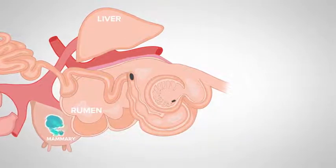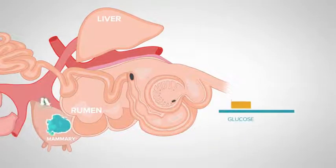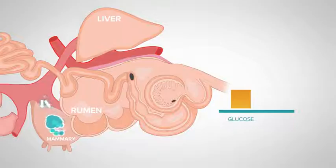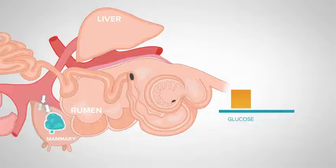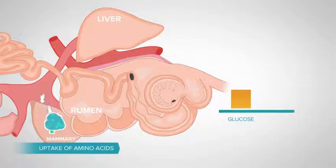What we also see is that if we increase the amount of glucose produced, we see increased insulin, and among its other functions, this results in an increase in the uptake of amino acids into the mammary gland and an increase in milk protein production.